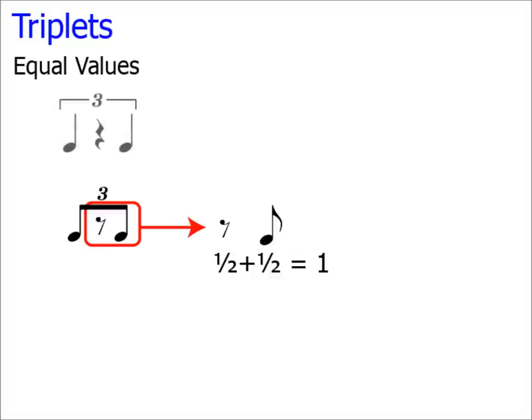Here are some more triplets. Don't be fooled by the rest. The values all equal 1. Therefore, we sum 2 of the values, and that gives us the total value of the triplet: 2.